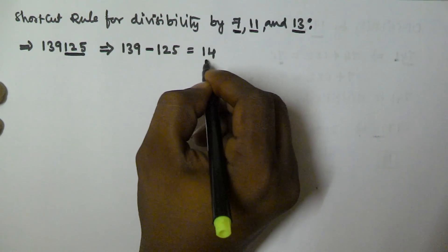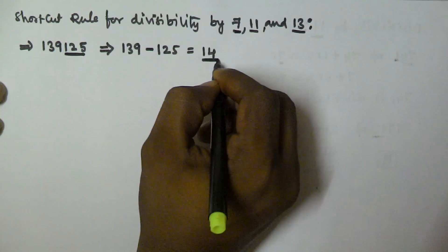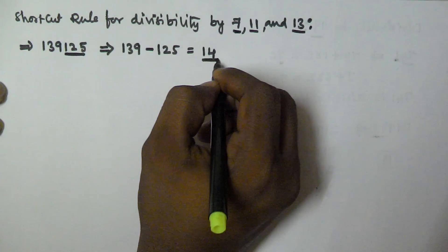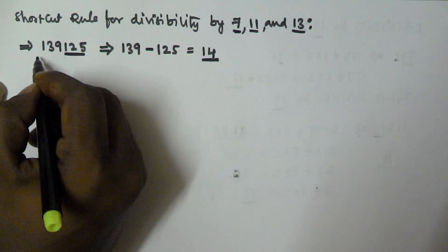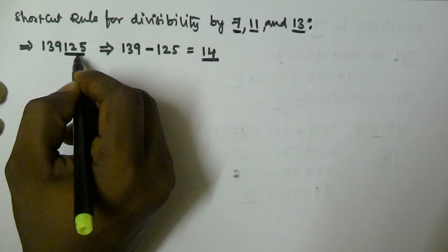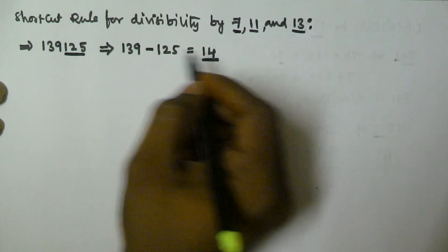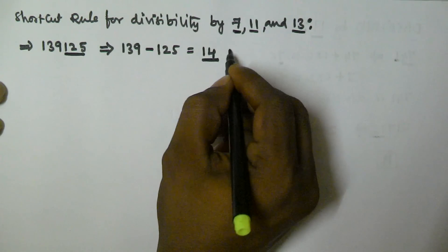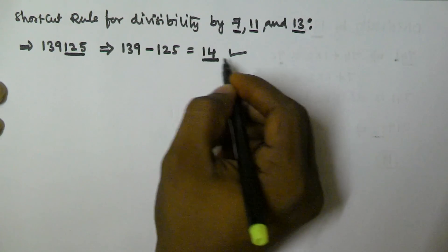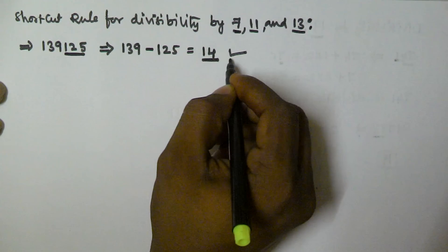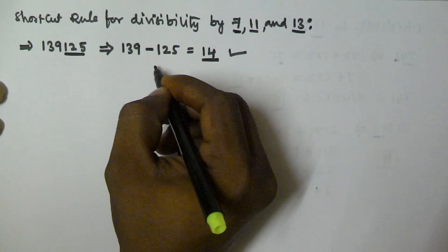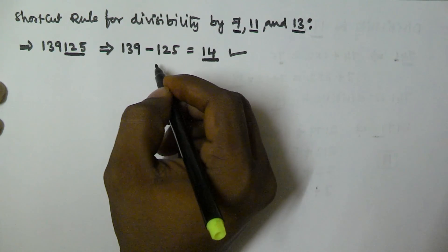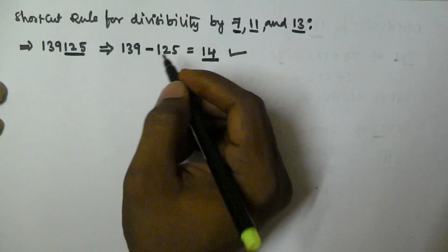We know that 14 is divisible by 7, so the given number 139125 is divisible by 7. If you get a larger number, repeat the same procedure.